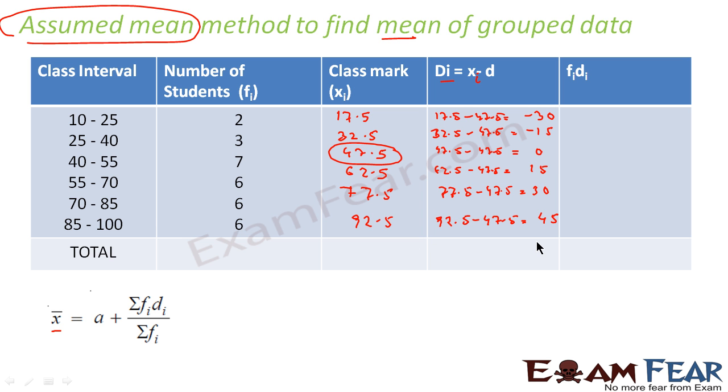I got the value of di's. Now I have to find fi di—that is I have to take these values and multiply with this guy. So minus 30 into 2 is minus 60. Minus 15 into 3 is minus 45. 0 into 7 is 0. 15 into 6 is 90. 30 into 6 is 180, and 45 into 6 is 270.